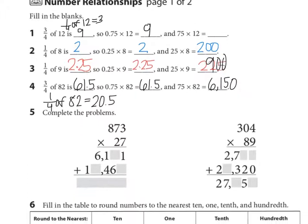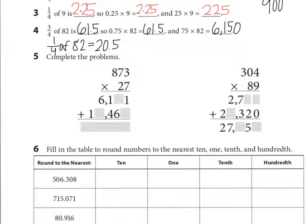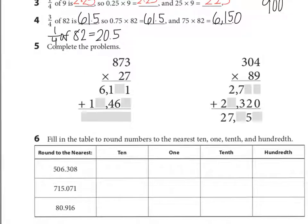Let's move on to number 5. We're looking at a standard multiplication algorithm, 873 times 27. Now, if it's easier for you to solve it out on the side and then fill in the boxes, please do so. I'm going to do that now. 7 times 3 is 21. 7 times 7 is 49 plus 2 is 51. 7 times 8 is 56 plus 5 is 61.